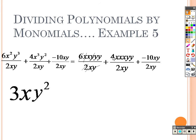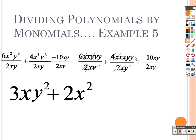Moving on to the next one. 4 divided by 2 is 2. I have one x on both the top and the bottom, so they can cross right out. I have one y on both the top and the bottom, so they can cross out. And I put that x squared there — how many x's do I have left on top? 1, 2 — x squared. How many y's do I have left on top? Just a y. And there's that.